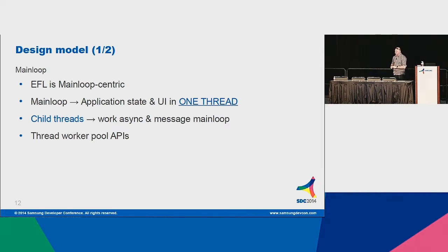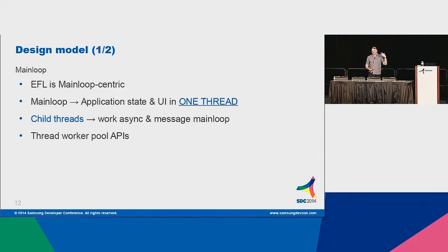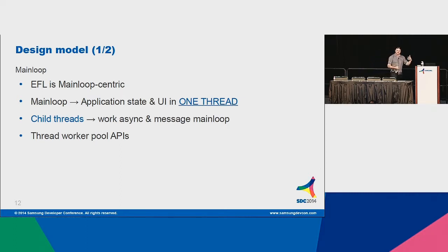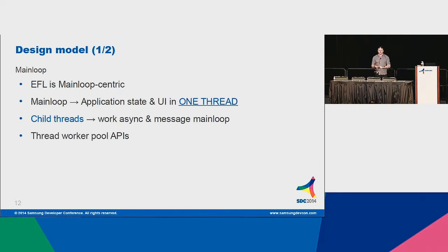EFL is main-loop centric. Your main loop is the state engine of your application — it's a state machine that holds your UI state and handles transitioning from one state to another. All the code expected to run from the main loop is generally not thread-safe; it's intended to only run from that main loop. The design encourages you to move any work that would take too long — anything blocking in I/O or doing a lot of calculation — to child threads, which message back to the main loop when done. All the infrastructure for that messaging is already provided.